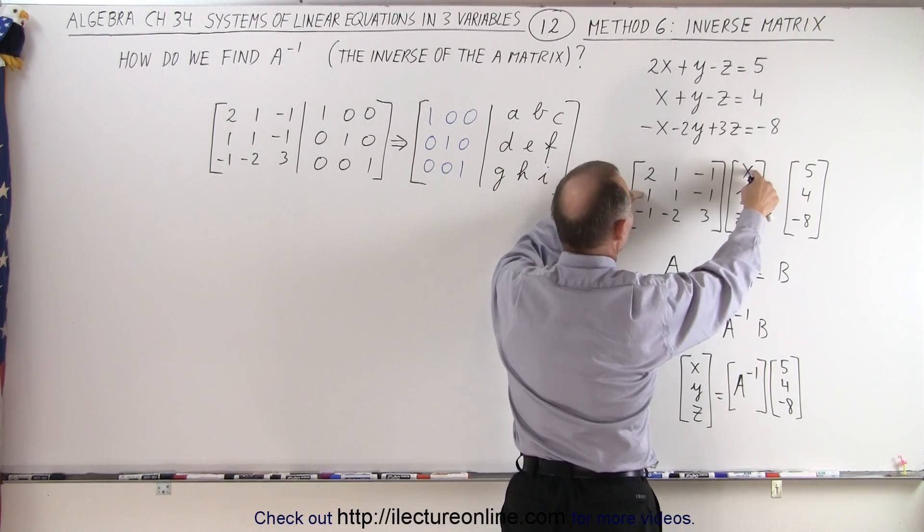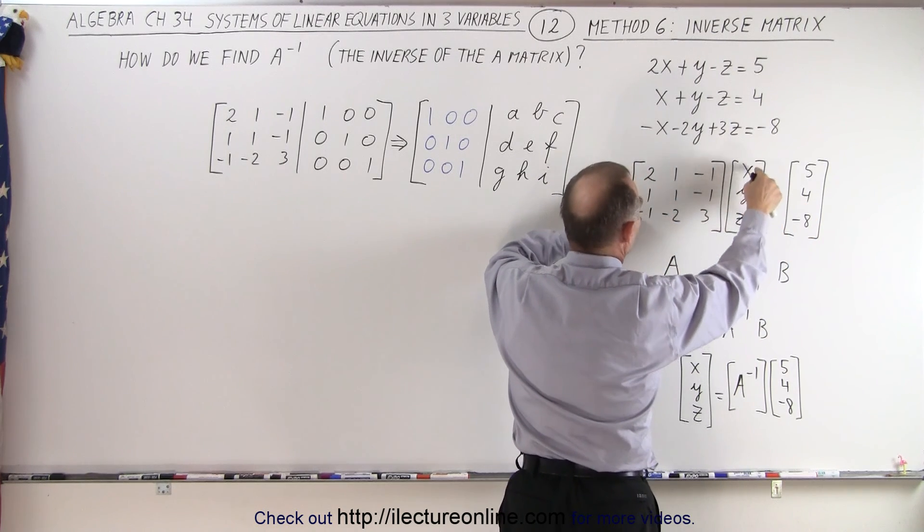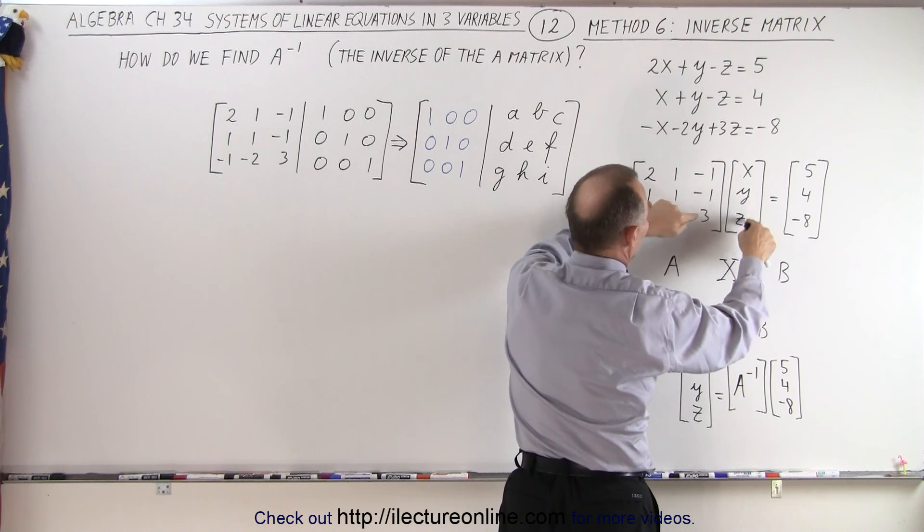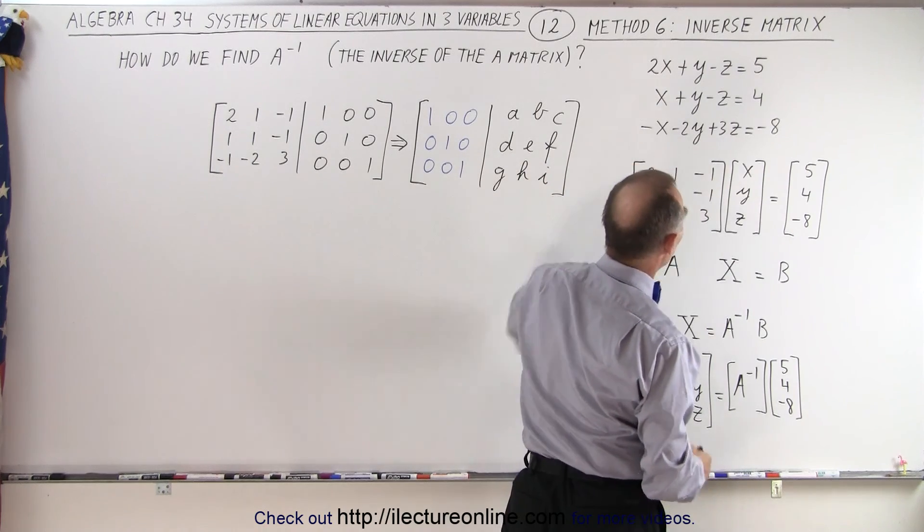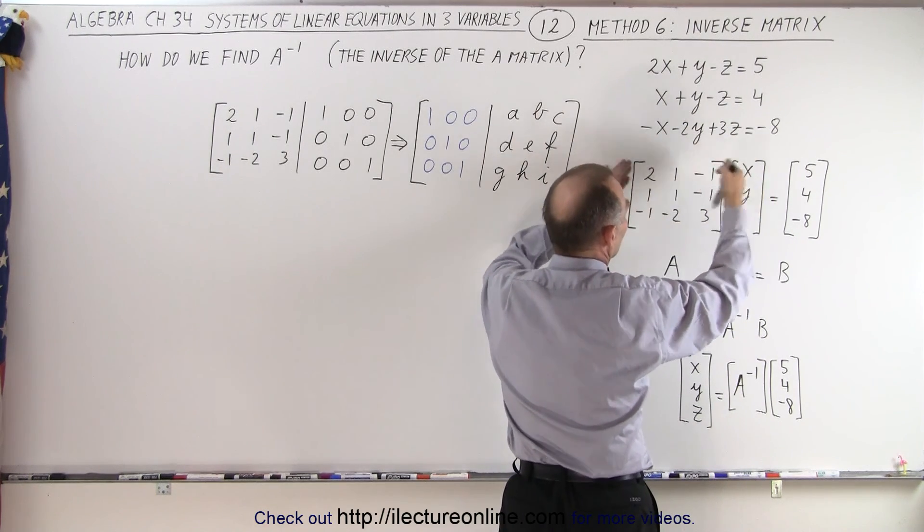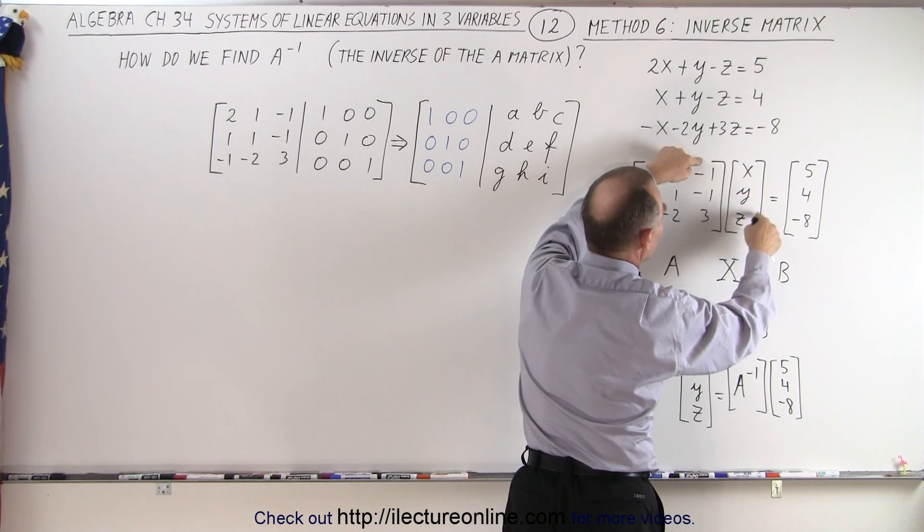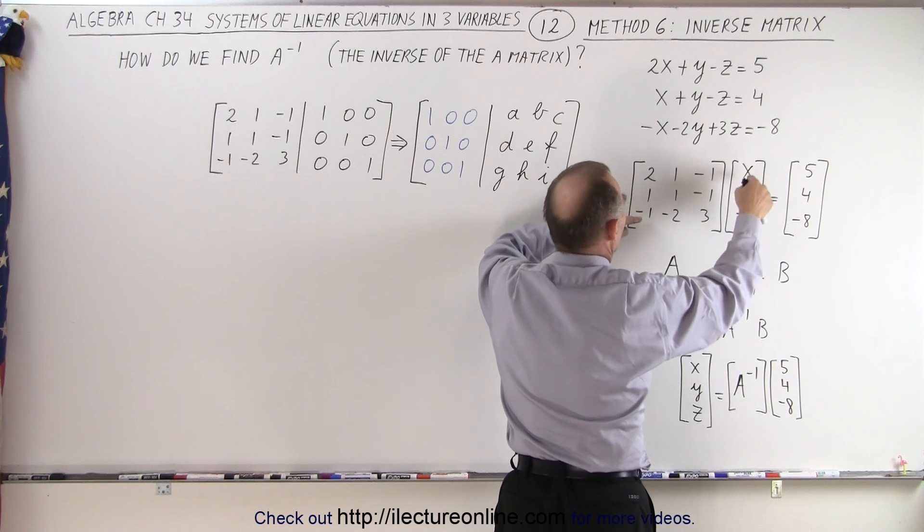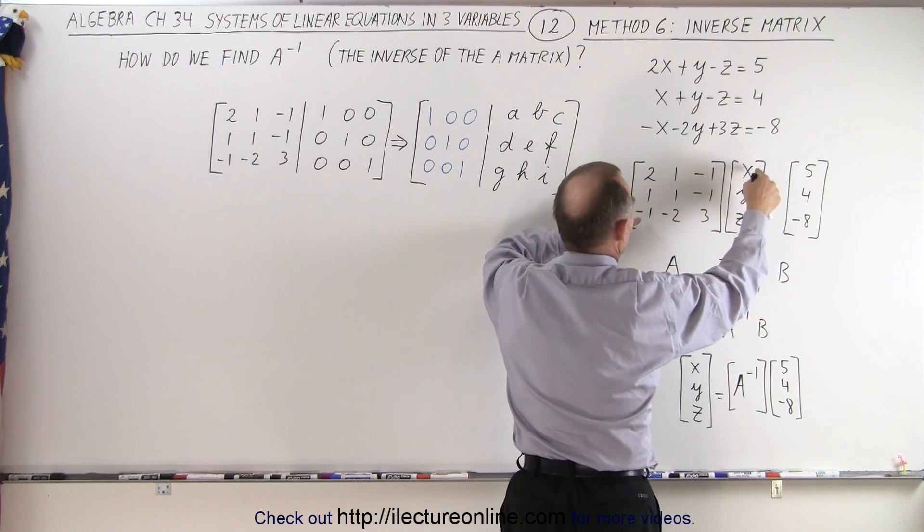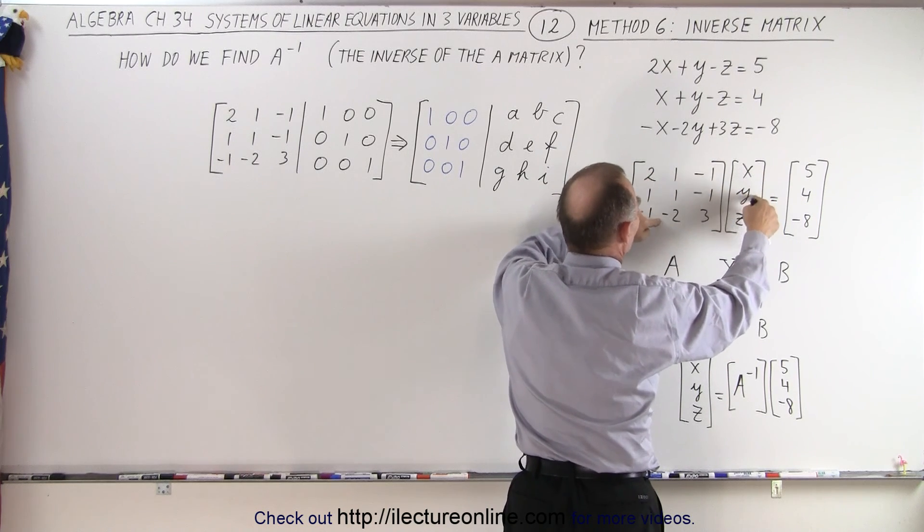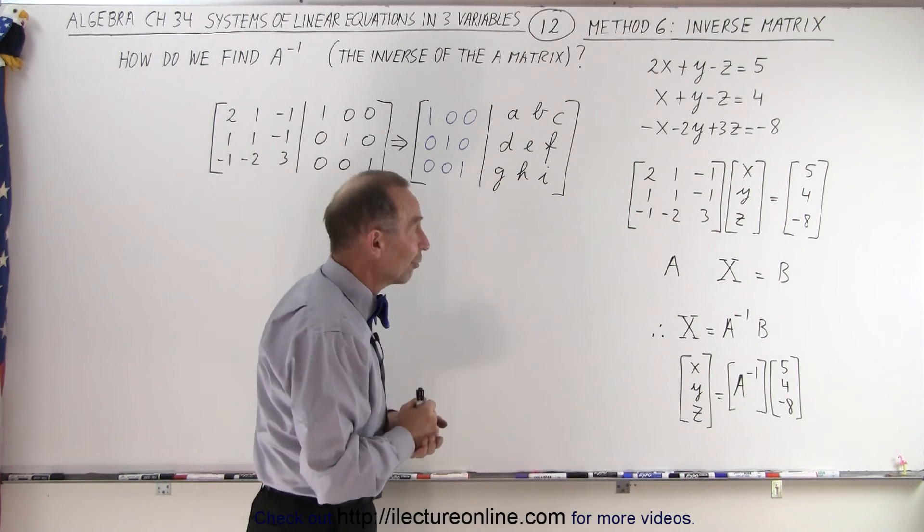We can write 1 times x, plus 1 times y, minus 1 times z, equals 4. And minus 1 times x, minus 2 times y, 3 times z, equals minus 8. So we go across from left to right here, and we go down here. That's how you multiply these matrices. 2 times x, plus 1 times y, minus 1 times z equals 5. 1 times x, plus 1 times y, minus 1 times z equals 4. And minus x, minus 2y, plus 3z equals negative 8. You can see it's essentially the same thing, just in a different format.